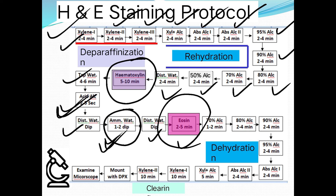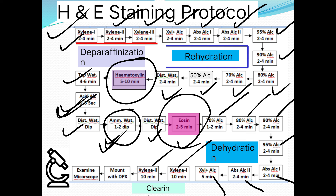After the hematoxylin steps, proceed to eosin (the counterstain) for 2–5 minutes. Eosin stains the nucleus and cytoplasm. Then dehydrate: 70%, 80%, 90%, 95%, absolute alcohol 1, absolute alcohol 2, then clearing in xylene plus alcohol (5 minutes), then xylene 1, xylene 2 (10 minutes each). Finally, mount with DPX — place a drop of DPX on the tissue on the slide.